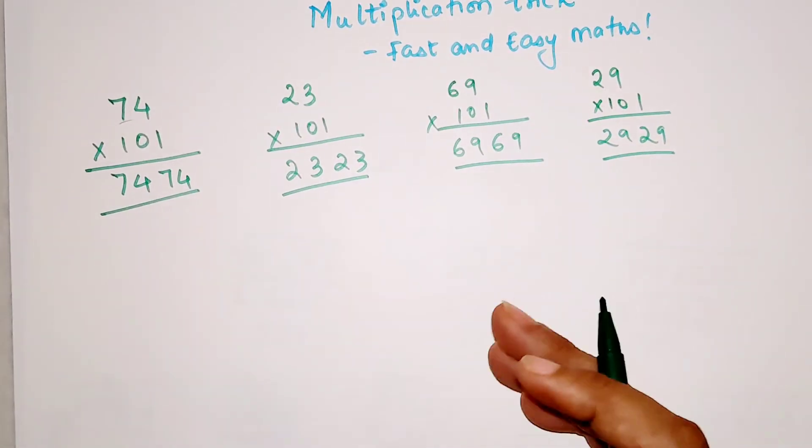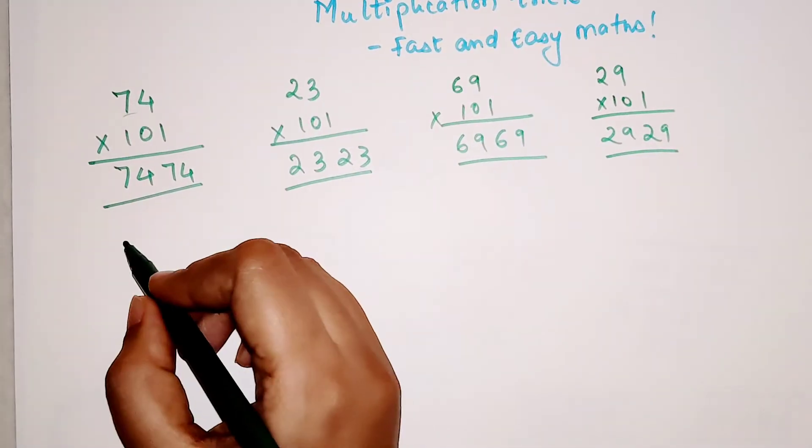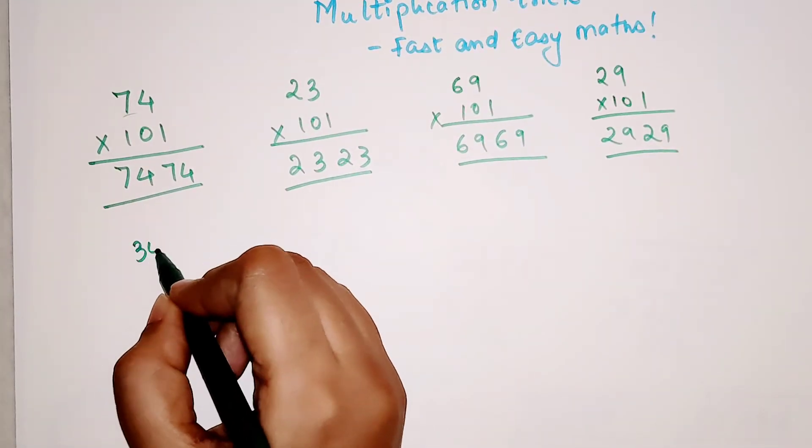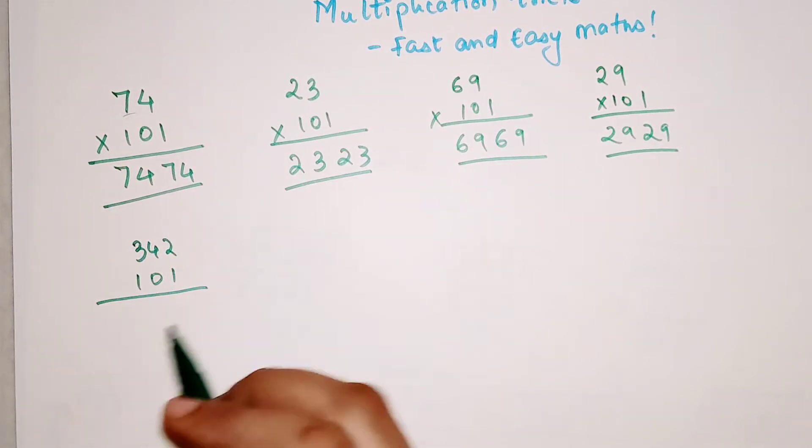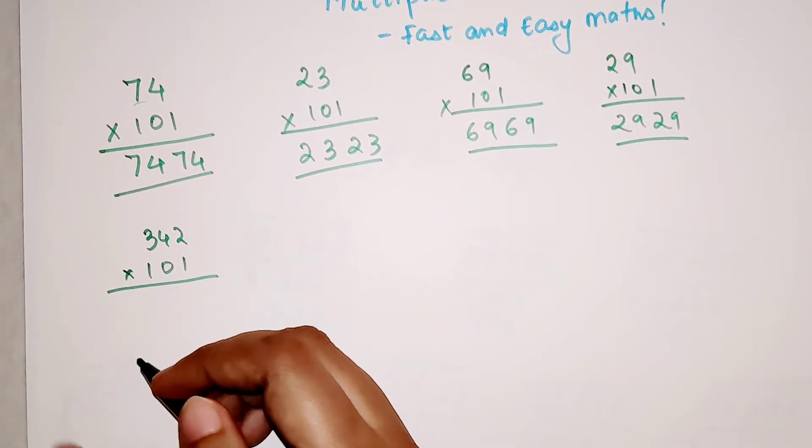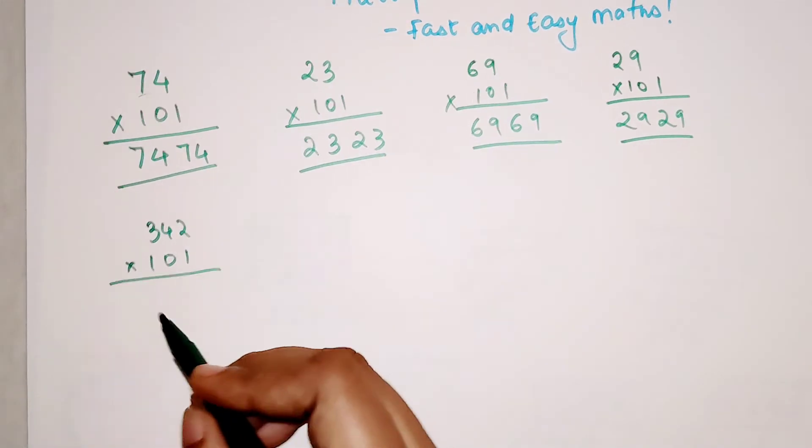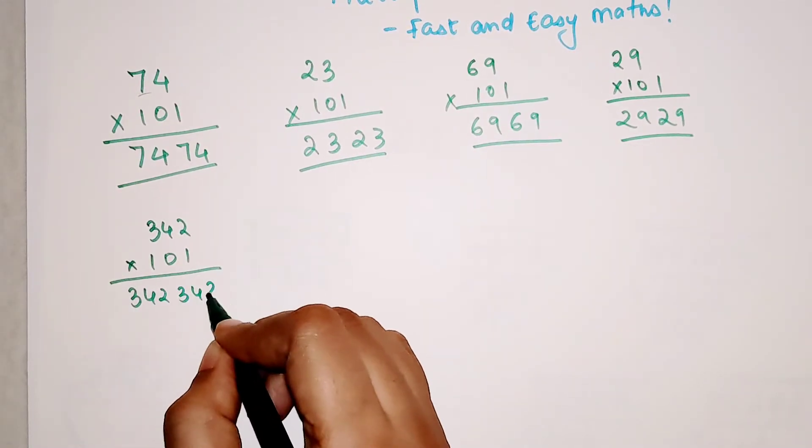Now coming to the part where you have 3 digit in both the cases. Let's say if we had 342 and 101. This particular trick requires 2 steps. Initially then you can do it orally. So first thing is what you would again do the same thing: 342, 342.